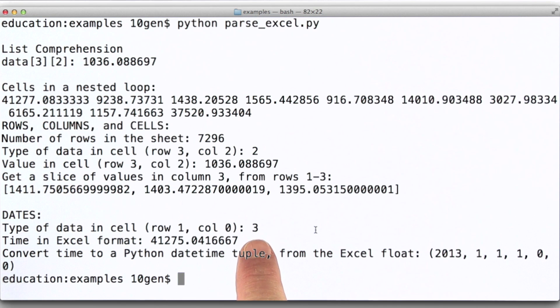Now, xlrd does distinguish the fact that that particular cell holds a date. But here's the time represented as a floating point number. What we can do is convert this to a Python datetime tuple using that xlrd method that I showed you. And this gives us a much better representation of the data that we're interested in. So in this case, what we've got is row one, column zero.